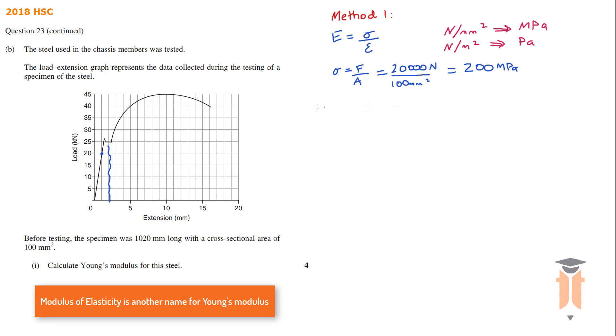Okay now that I've found my stress I now need to find my strain. So I know that my strain is equal to extension over original length. And the extension at this 20 kilonewtons force is if we take it down there we get one millimeter. So that's equal to 1 over 1020. And strain has no unit.